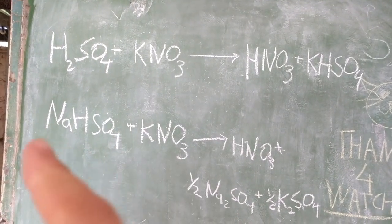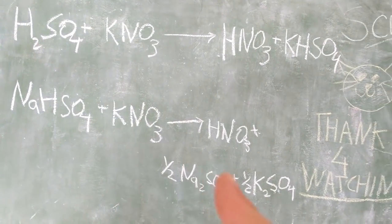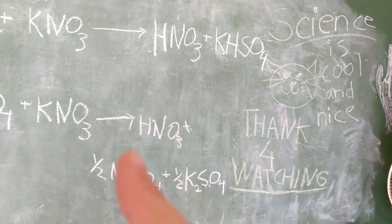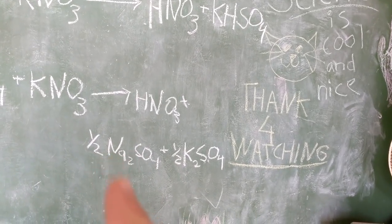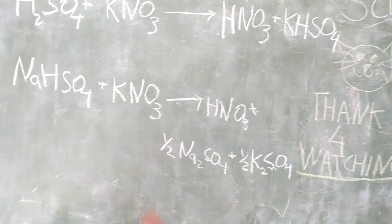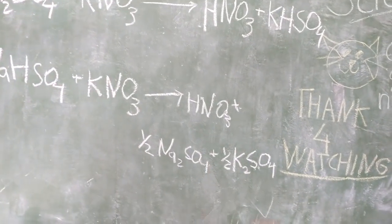What we're going to do instead is we're going to take sodium hydrogen sulfate or sodium bisulfate as I prefer to call it, and the nitrate salt, and that's going to boil off some nitric acid and leave us with an equivalent each of sodium sulfate and potassium sulfate. I know it's unbalanced as well but it highlights the equation better when I write it like this so just ignore that.